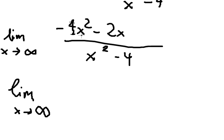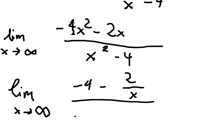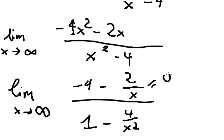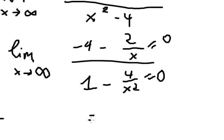We divide through by x squared. As x goes to positive infinity, the terms with x in the denominator go to 0. We are left with negative 4 divided by 1, which gives negative 4. That is the answer.